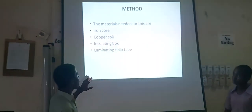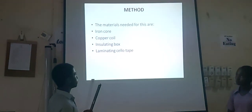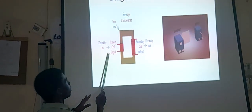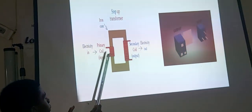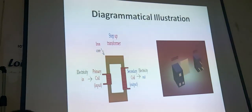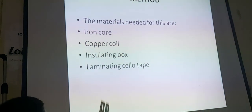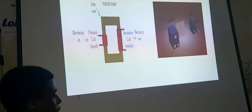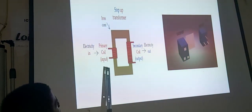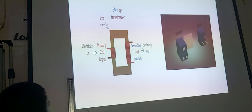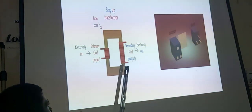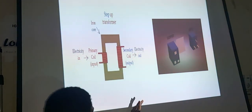Here, as shown up here in our diagram, the primary coil is wound. Our method will be requiring copper coil, iron core, an insulating box, and laminating cellulose. The copper coil is wound around the iron core and then connected to the generator. And then the secondary coil is also wound around the iron core and connected to the device intended to be powered up.